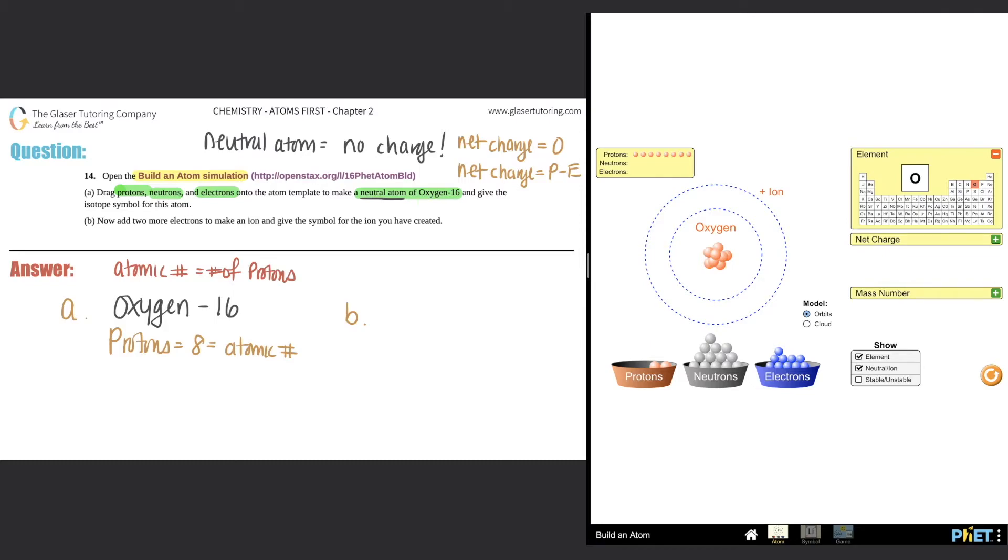We figured out that oxygen has eight protons, and that is the atomic number for oxygen. Next, we need to make it neutral. That means that the number of protons has to equal the number of electrons. If it's a neutral atom, the number of protons have to always equal the number of electrons. If you have eight protons, technically you should have eight electrons. I'm going to drag that in there: one, two, three, four, five, six, seven, eight.